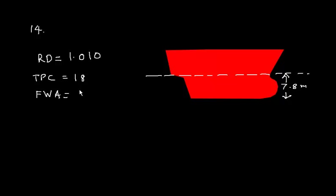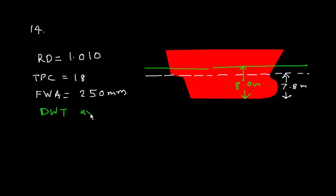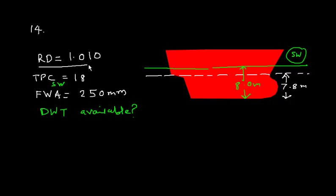The fresh water allowance is 250 mm and the maximum permissible draft in salt water is 8 meters. We have to find the dead weight available. The TPC given is 18, which is for salt water unless otherwise specified. The maximum permissible draft is in salt water; however, the vessel is presently in dock water of RD 1.010.